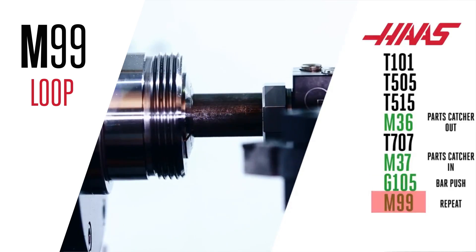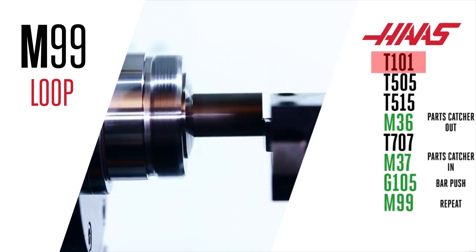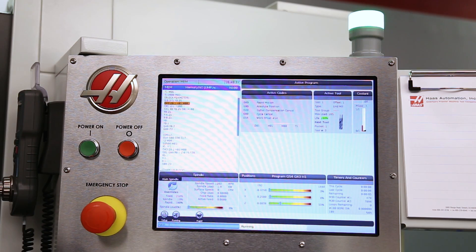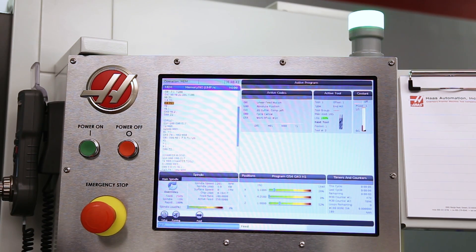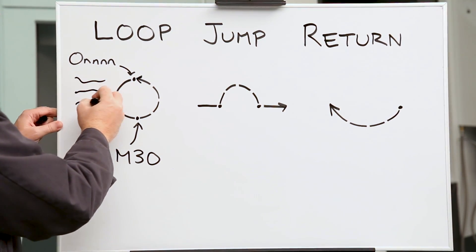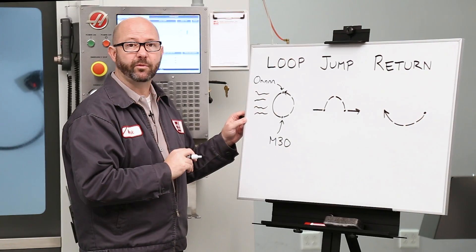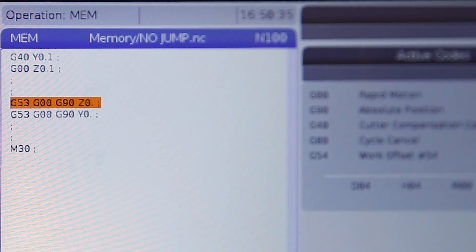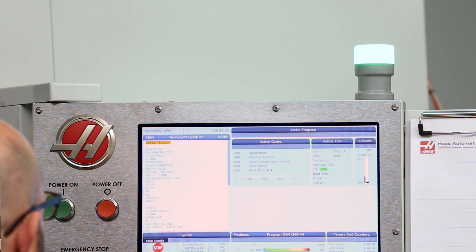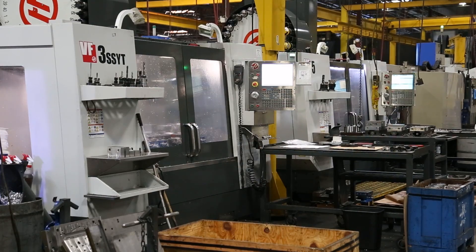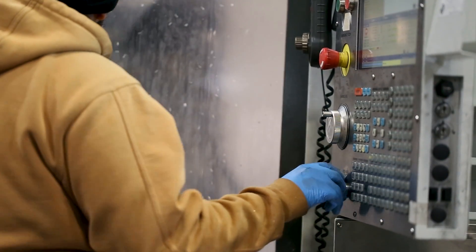Now you might have seen an M99 loop before. In a typical program, when we press the green cycle start button, our machine is going to start running the code line by line, starting with the O number at the top. It's going to execute one line at a time until it gets to the bottom of our program where we've got an M30. When the M30 is reached, the machine is going to stop all motion. The control will reset the program back to the top, and then the machine is going to sit and wait for us to press the green button to start the entire cycle all over again.